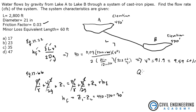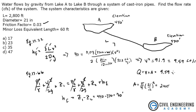Now we plug into the flow rate equation: Q equals velocity times area. Velocity is 9.59 ft/s. Area is π/4 times diameter converted to feet squared, which gives 2.405 ft². Multiplying: Q = 9.59 × 2.405 = 23 CFS, which is our answer — answer B.